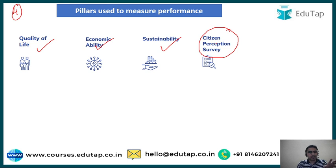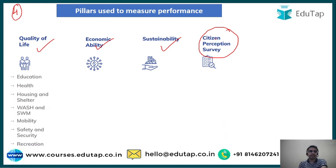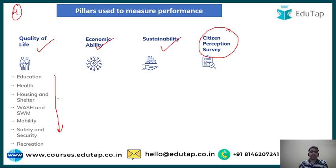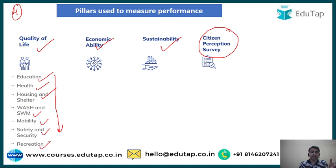Under each pillar there are specific indicators. The Quality of Life pillar captures the basic necessities citizens must have to live a good life — including access to education, basic health, affordable housing and shelter, solid waste management, mobility, safety and security, and recreation. Recreation covers activities related to entertainment and cultural activities.